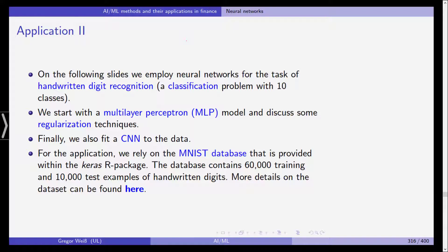We have a handwritten note and we want the neural network to be able to decide is this a 1, is this a 5 or is it 0 for example. We start with the multilayer perceptron. We will discuss some regularization techniques to prevent the model from overfitting and we will also fit a convolutional neural network to the data.